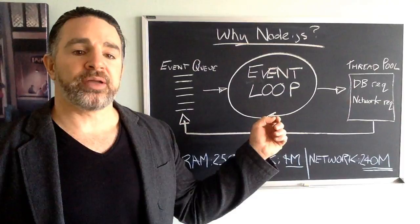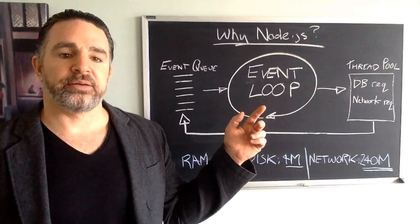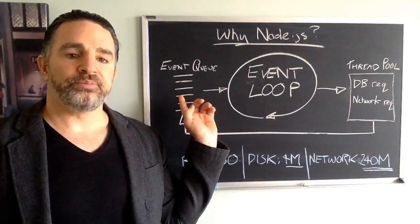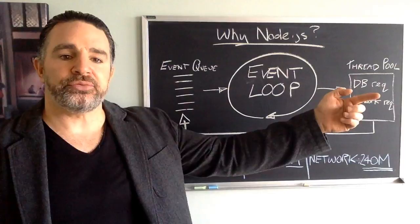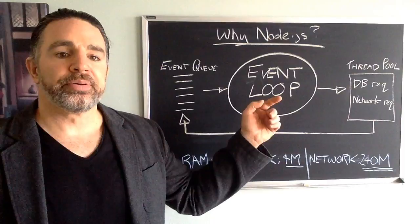We used an analogy in the previous video, which was a restaurant. If you think about the single-thread JavaScript and the event loop, it allows it to take an order from the customer and then pass that order off to the kitchen staff in the back. By passing off that order to the kitchen staff, it frees itself up — non-blocking — to then go and serve the next customer, the next request.